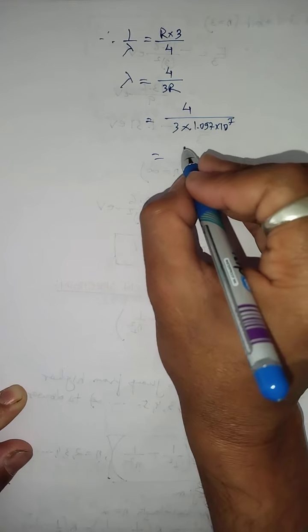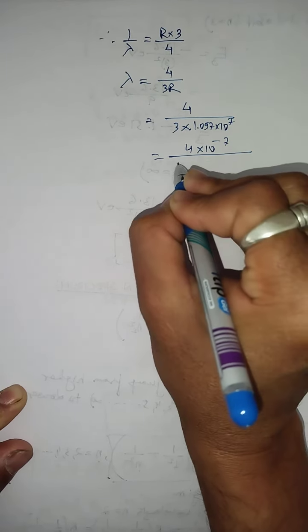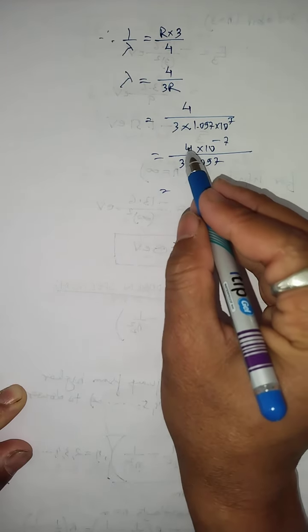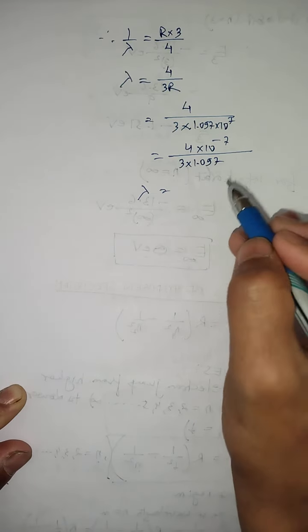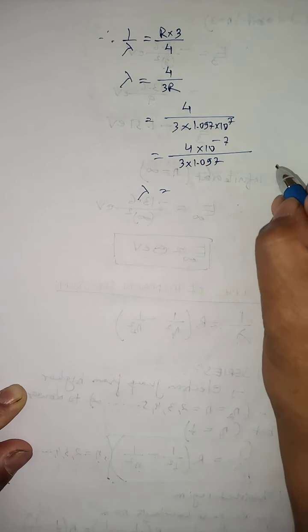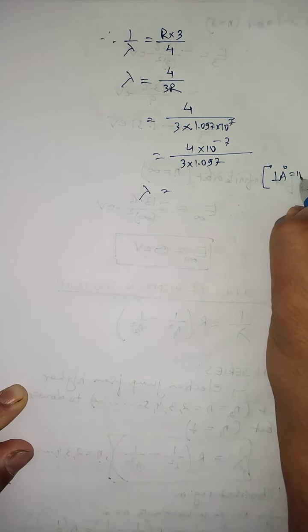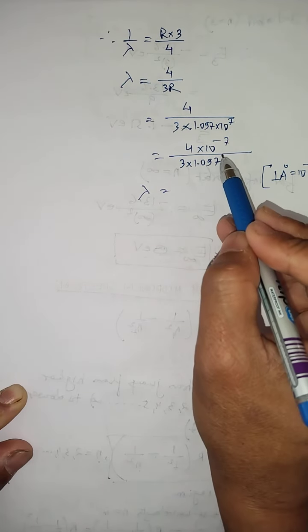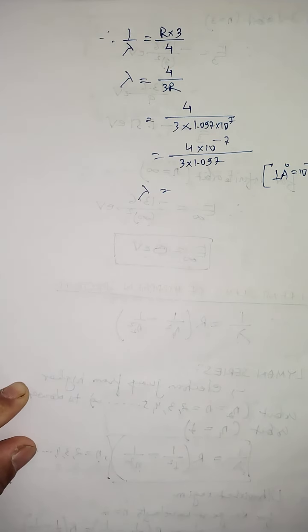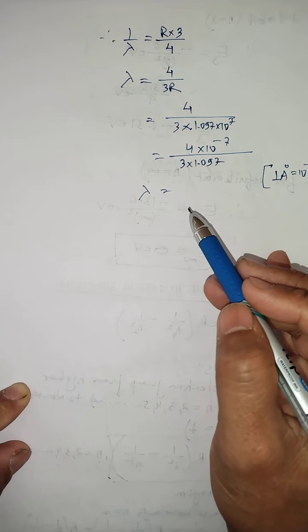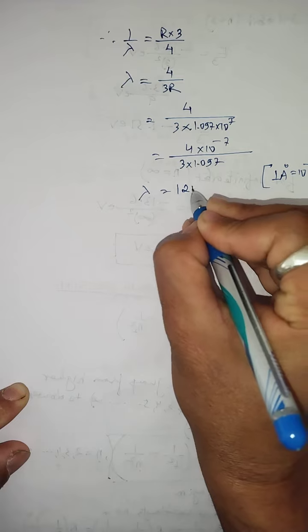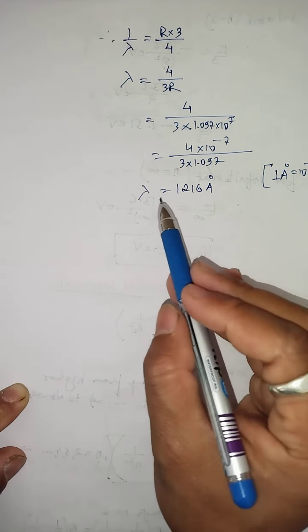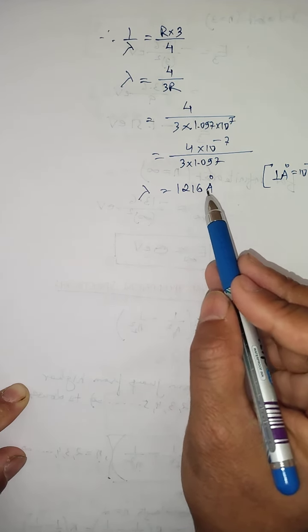We can convert the wavelength from meters to Angstroms, where 1 Angstrom equals 10⁻¹⁰ meter. When we do the calculation, the longest wavelength in Lyman series comes out to be approximately 1216 Angstroms.